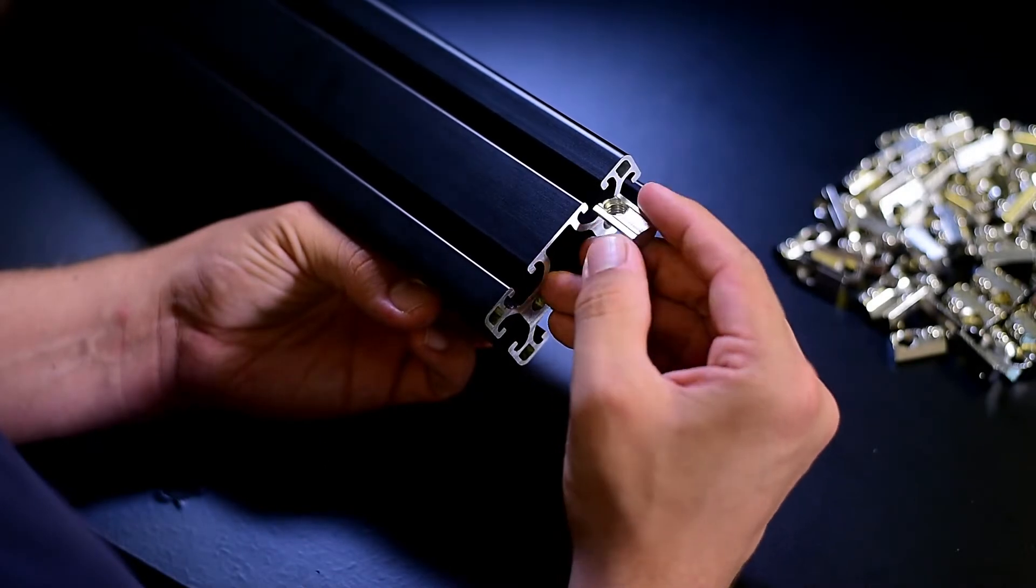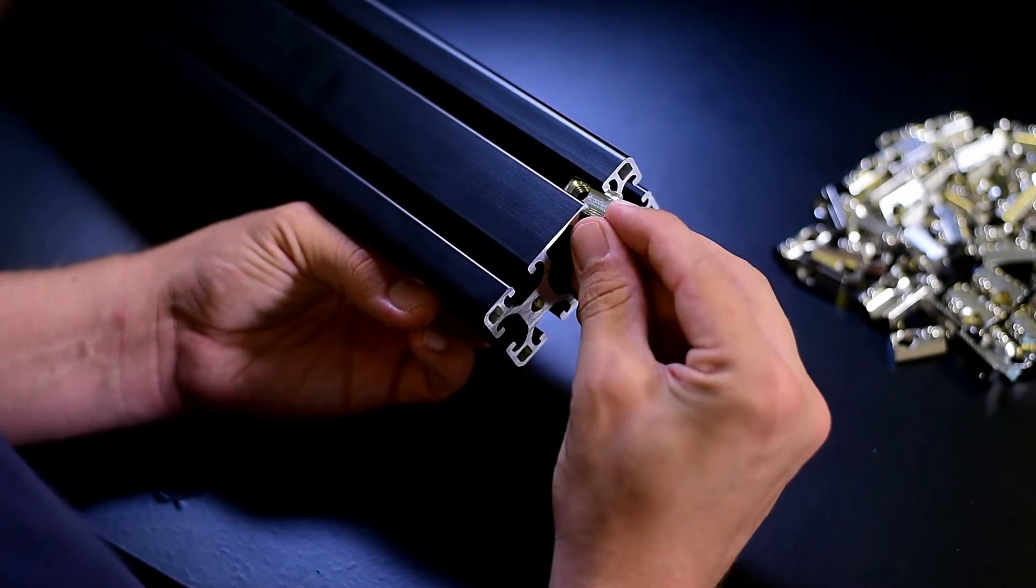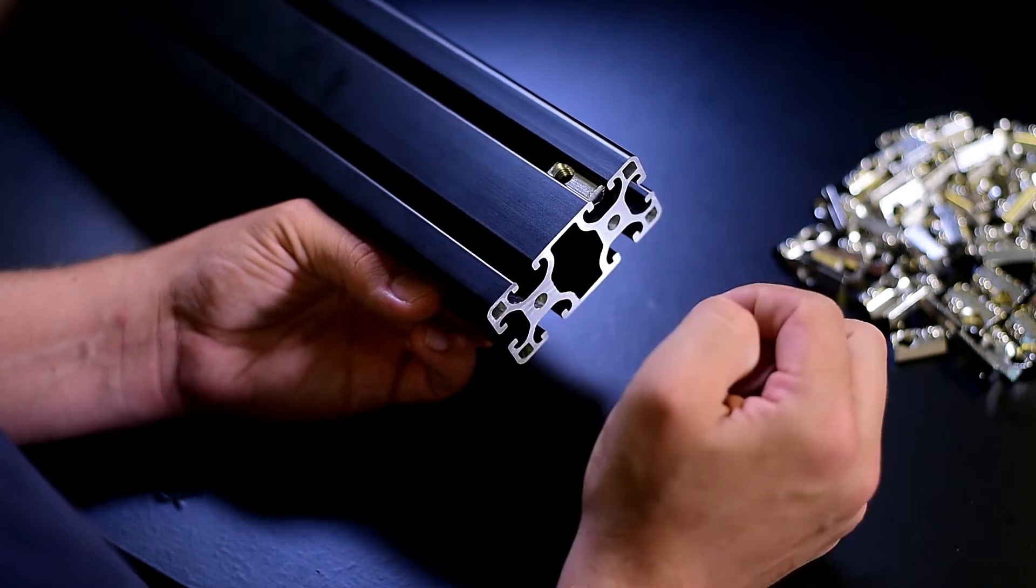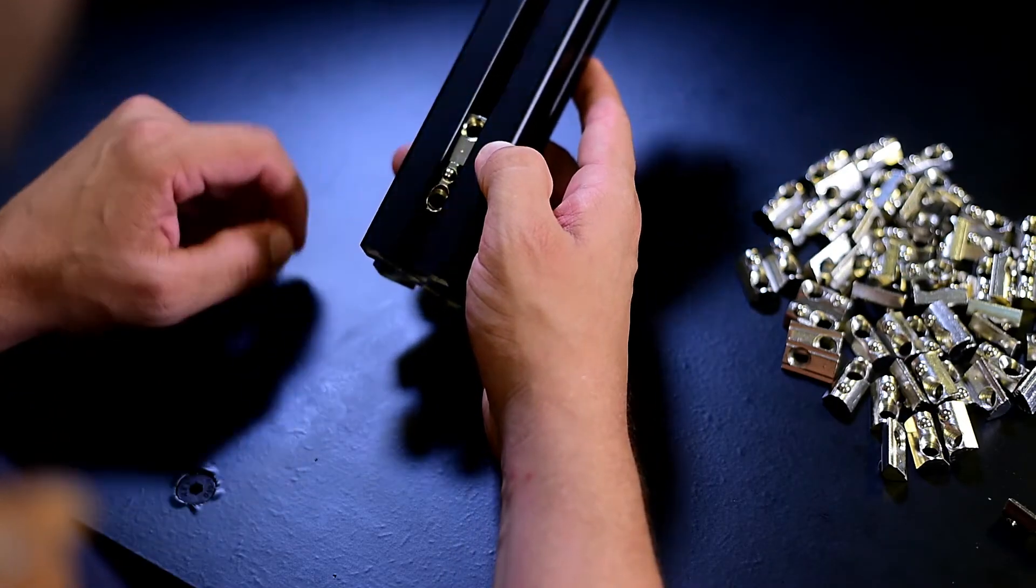You can slide the nut into the slot at both ends of the profile. Make sure the little spring-loaded bulb is facing downwards. This way it won't slide down once you move the profiles.